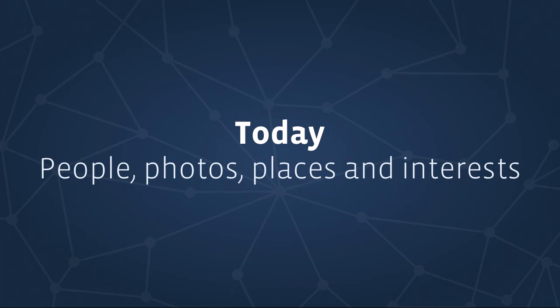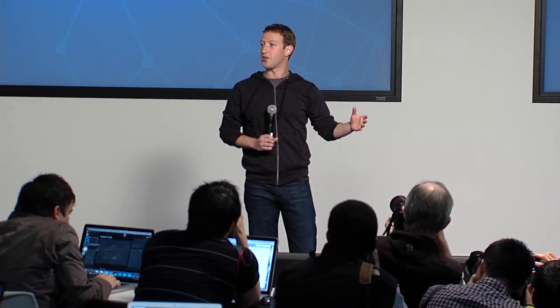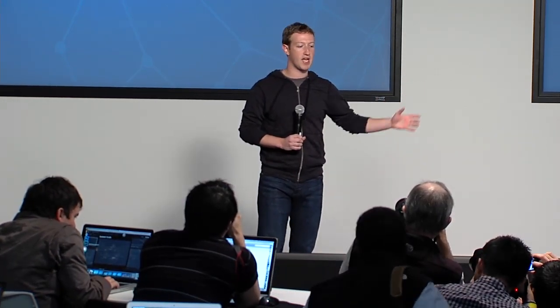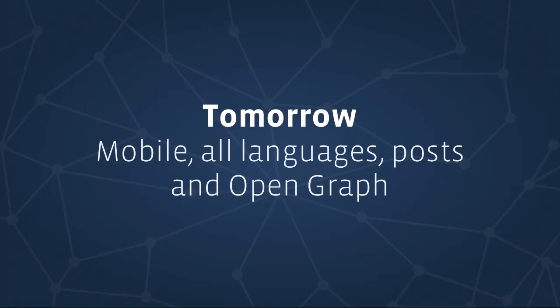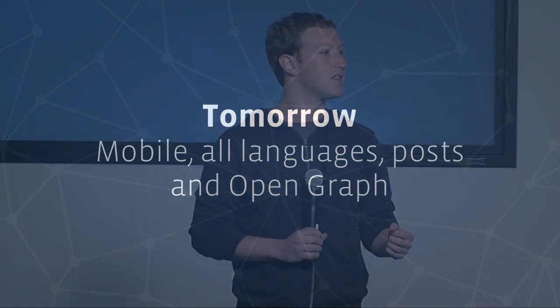Graph Search is a really big project — it's going to take years to index the whole map of the graph and everything out there. But we're really excited about the cases we have today: people, photos, places, and interests. There's more content we haven't gotten to yet than what we have. In the future, the obvious things we want to get to include mobile, all languages, indexing all posts and all content on Facebook, and eventually open graph. We're starting with English because about 40% of Facebook users speak English, but we want to get this to everyone.